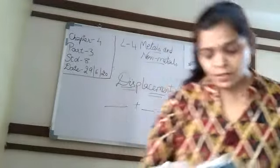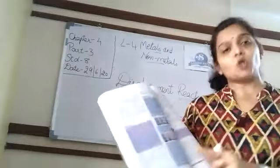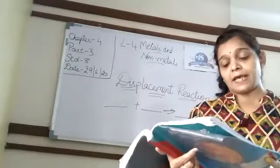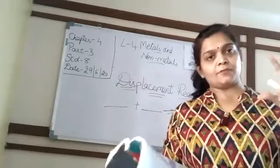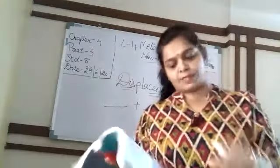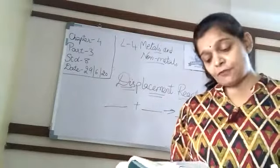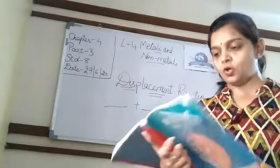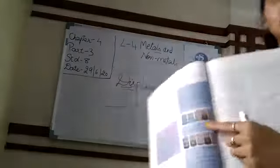Beaker C: zinc sulfate solution plus copper turnings. Beaker D: iron sulfate solution plus copper turnings. Beaker E: zinc sulfate solution plus iron nail. You can see in the picture that beakers A and B show changes, while beakers C, D, and E show no changes. In beakers A and B the solution color is changed, but C, D, and E are as they are — no reaction has taken place.